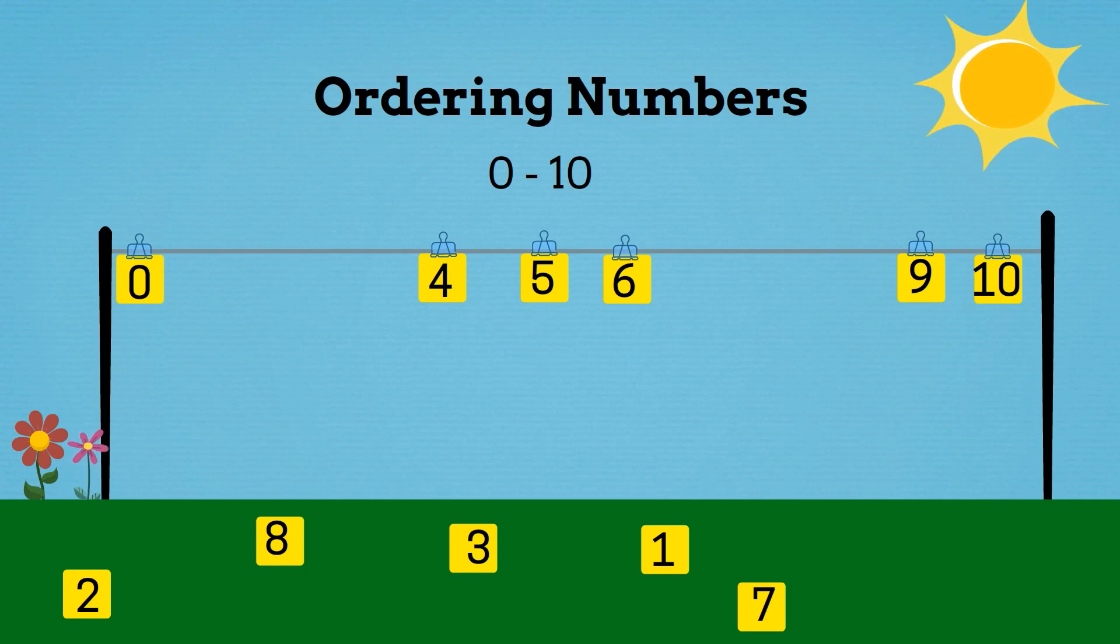Now what number comes after 0? It's the number 1. 1 is 1 more than 0. So 1 goes after 0.